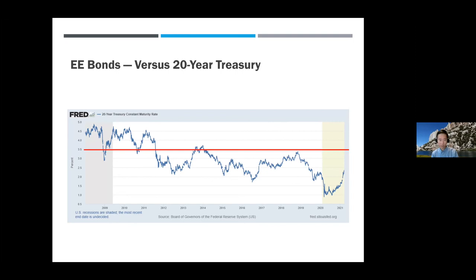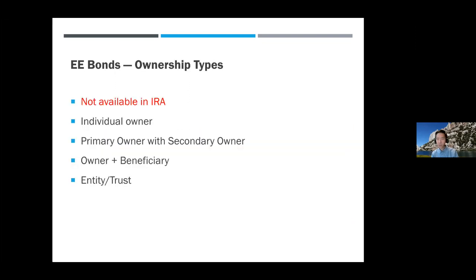Think of it as a huge early withdrawal penalty. Per $100, the EE bond at 20 years is worth $200. If you withdraw at 19 years, they only give you $102 — you lose almost half your value by withdrawing one year too soon. Comparing to the 20-year Treasury: since around 2011, the 20-year Treasury has barely beaten or even fallen below the effective EE bond rate of 3.5%. During the COVID period, the 20-year Treasury went as low as 1.0% while EE bonds were effectively getting 3.5%. If you bought EE bonds in 2011, you're already halfway through your 20-year journey enjoying that good rate.